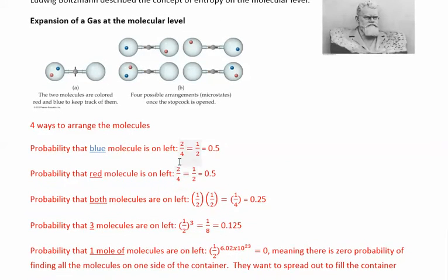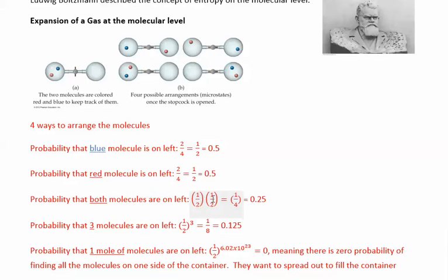There are four ways to arrange these two molecules. What's the probability that the blue molecule will be on the left? There are two pictures that have the blue one on the left, so the probability is two out of four, or one-half. The same probability applies to finding the red one on the left — two out of four. The probability of finding both molecules on the left is one-half times one-half, which is one out of four, or 0.25.